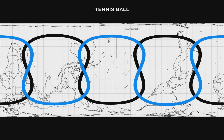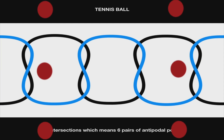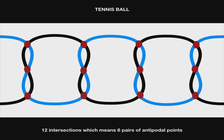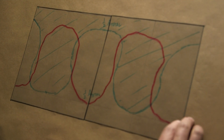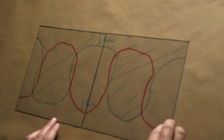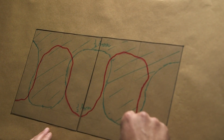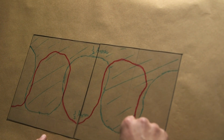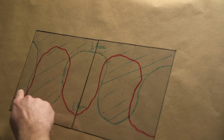You should have six pairs of antipodal points — 12 intersections corresponding to six antipodal pairs, six north-south pairs. Hand-drawn? Not so many. Hand-drawn, I got one — it's terrible. There's a couple there.